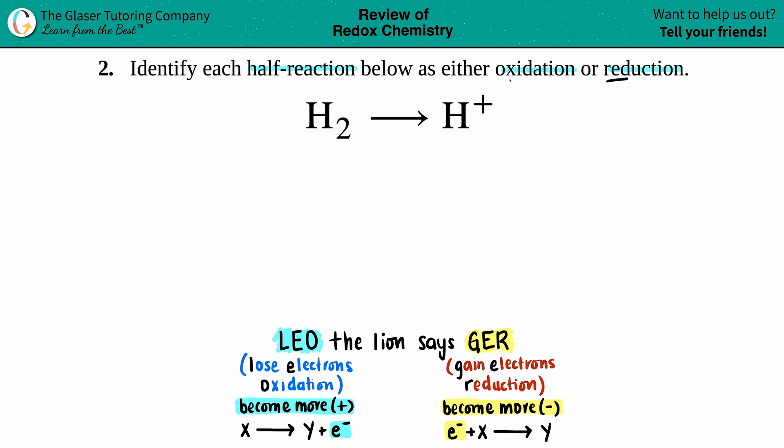which is redox - reduction and oxidation squished together - we always think of the mnemonic LEO the lion says GER. LEO is an easy way to remember that whenever you lose electrons (LE), you're undergoing oxidation.